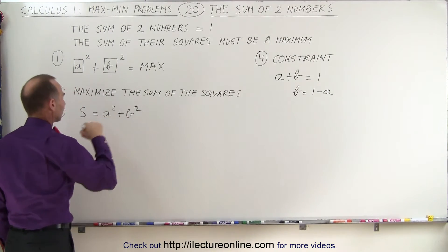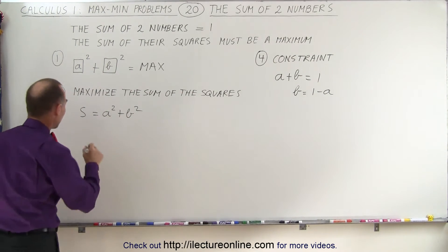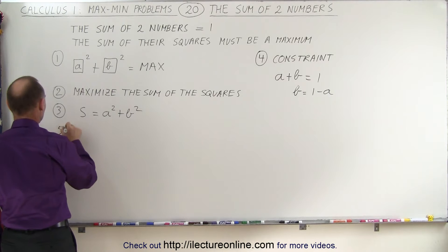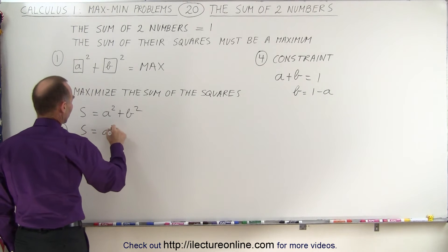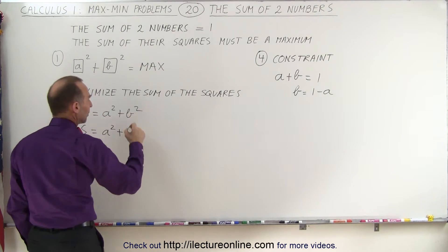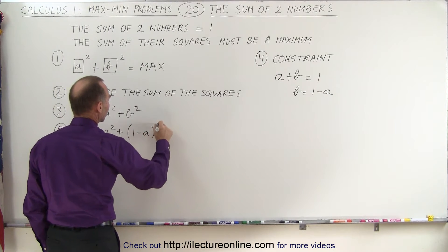Which means that B can be represented by 1 minus A, and we can substitute that back into our equation right here. So let's do that. So that would be number 5, Step 5. S equals A squared plus, instead of B, we write 1 minus A quantity squared.